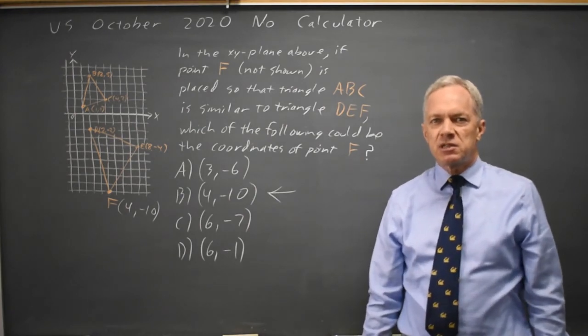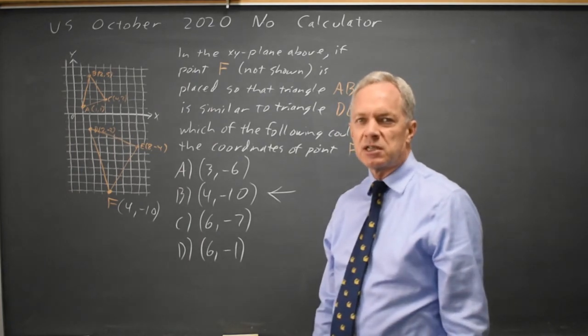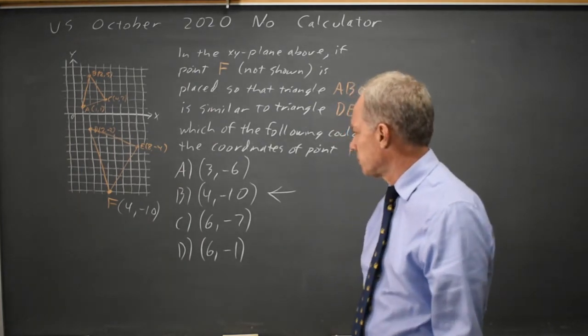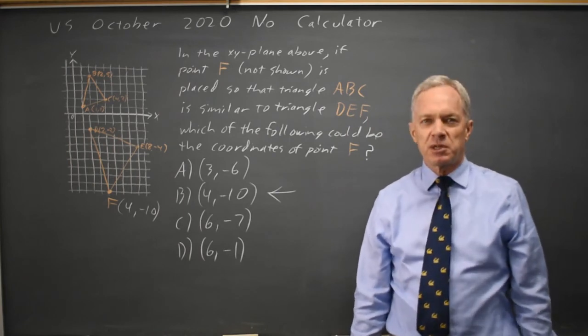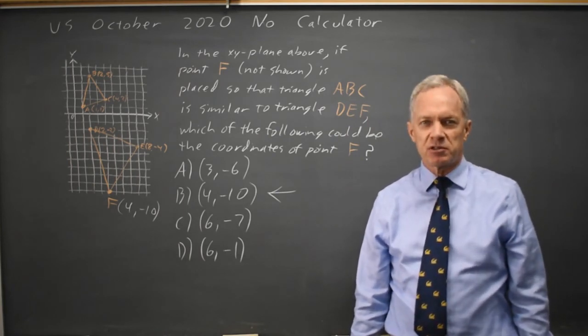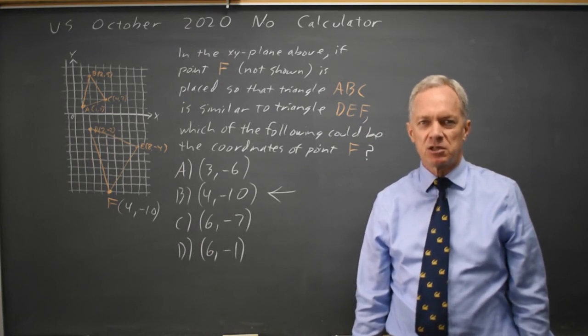If this doesn't work for you, you can graph all four points, sketch the triangles and see which ones look similar. This is probably unusually hard for a similar triangles question unless you depend on the intuition and which one looks right.